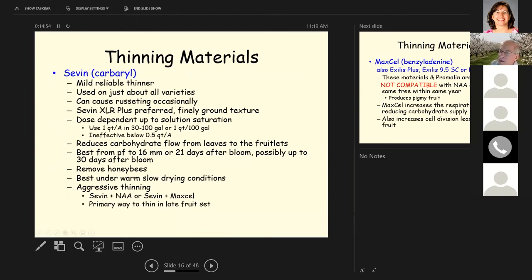Seven is the second thinner. This is one that's been around for the longest period. It's considered to be a mild, reliable thinner. It can be used on just about all varieties and it can cause a little russeting occasionally. So something like Golden Delicious may be a little susceptible to this. We prefer the 7XLR product because it's finely ground and it gives a little more consistent thinning than some of the other products. It is dose dependent up to solution saturation.